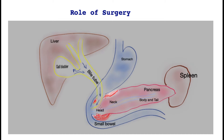For clarity, let's draw a tumour in the head of the pancreas. This is a complex part because the bile tube traverses through it and the small bowel is nearby. This tumour can obstruct the bile tube, and it can also obstruct the adjoining small bowel if it gets bigger.